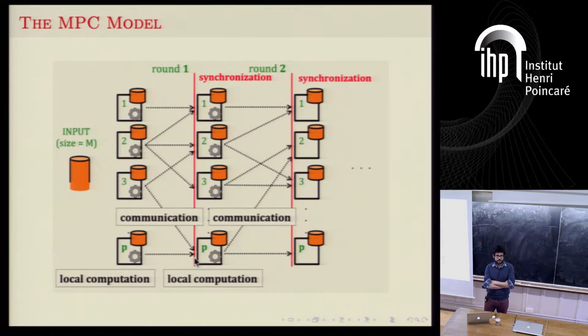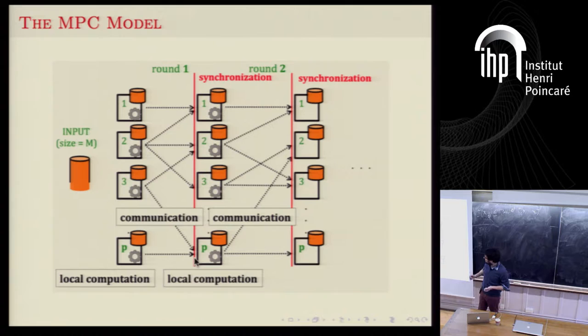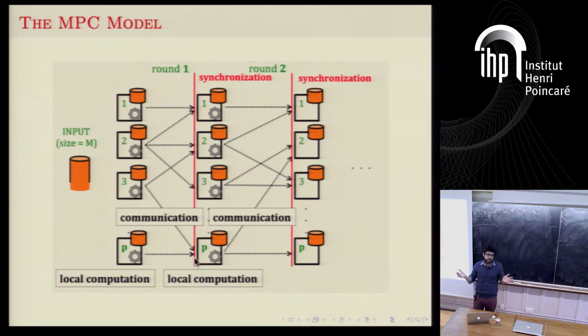Why do they need to synchronize? Why can't they just compute as soon as they get the data they need? Well, if they don't synchronize, a machine might receive data from previous rounds and not know when it arrived. So you don't know at which point of your computation you received the data. You can actually run these algorithms in an unsynchronized way, but we need a method to determine how many rounds you have, and the synchronization barriers nicely define the rounds, which are a measure of complexity.